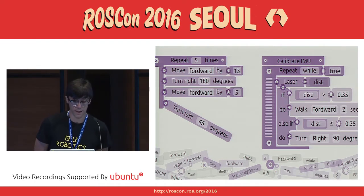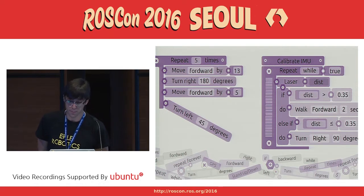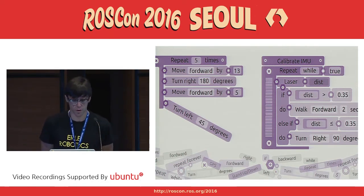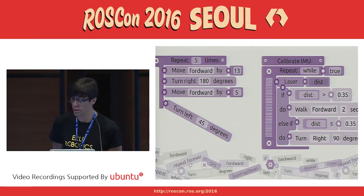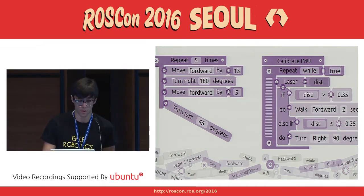This led us to look into systems like Scratch for robot programming, and the output of this prototyping has become Robot Blockly — a multi-platform, web-based tool for programming robots and drones that use ROS.